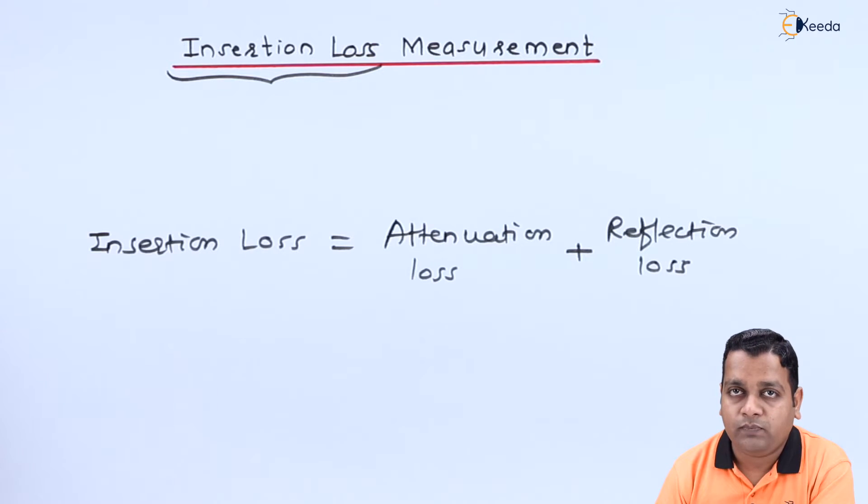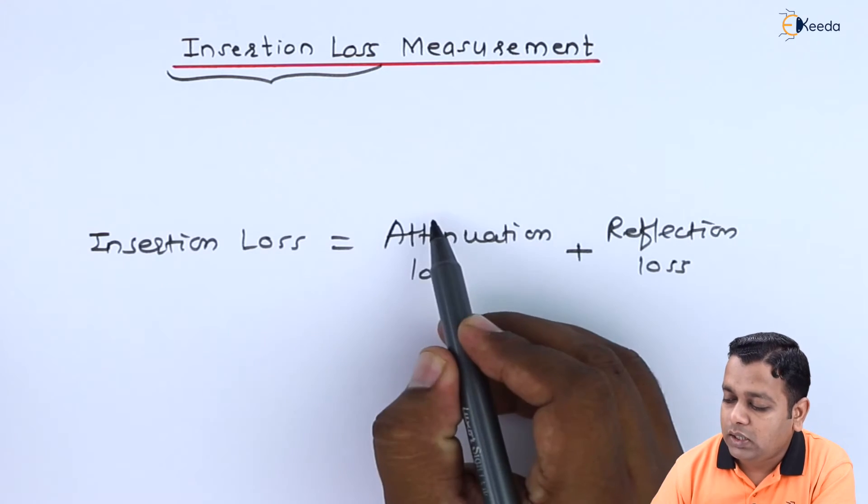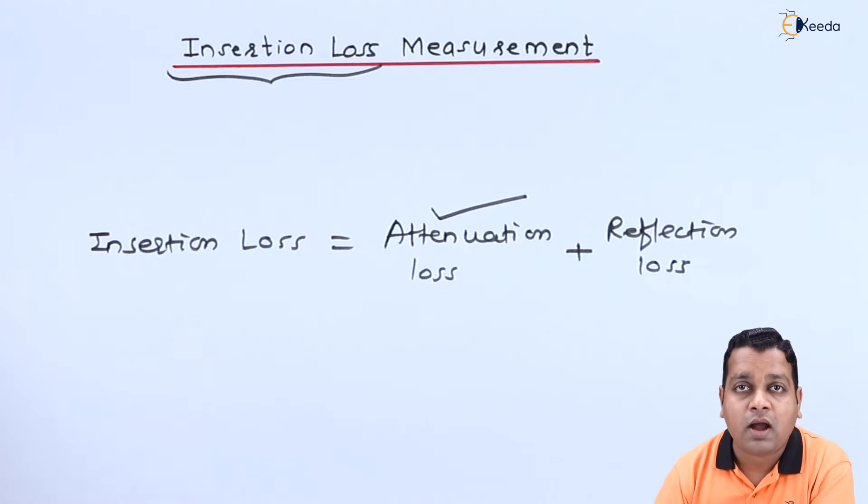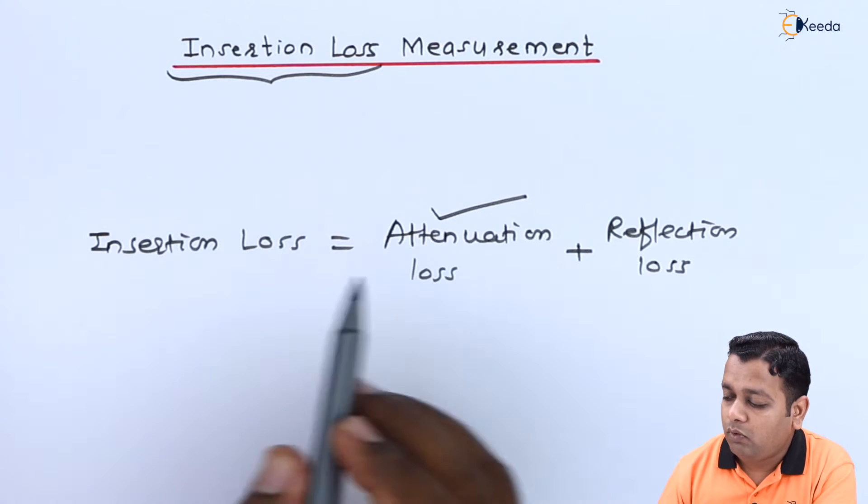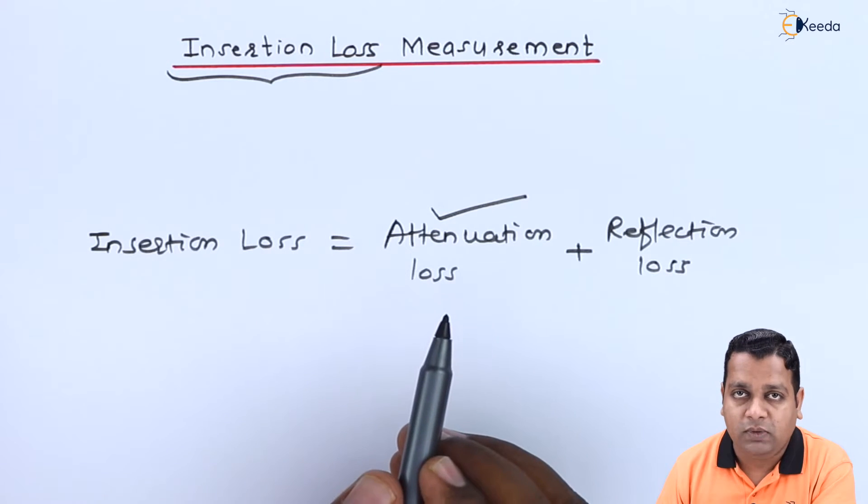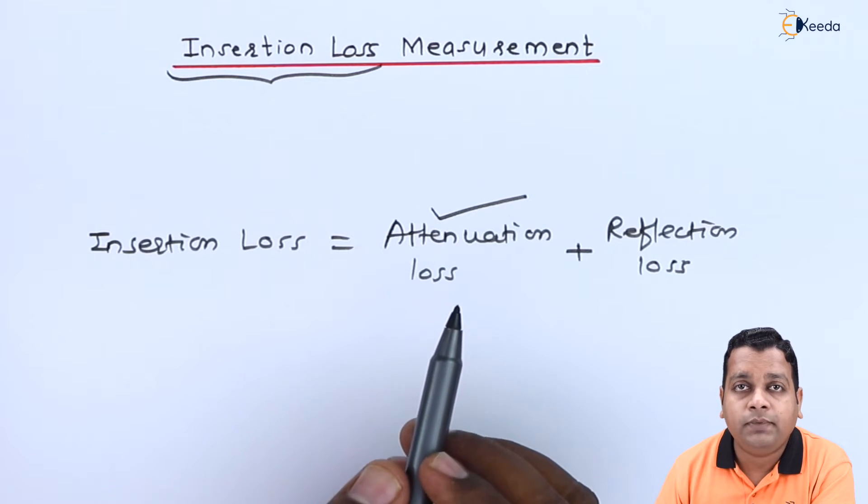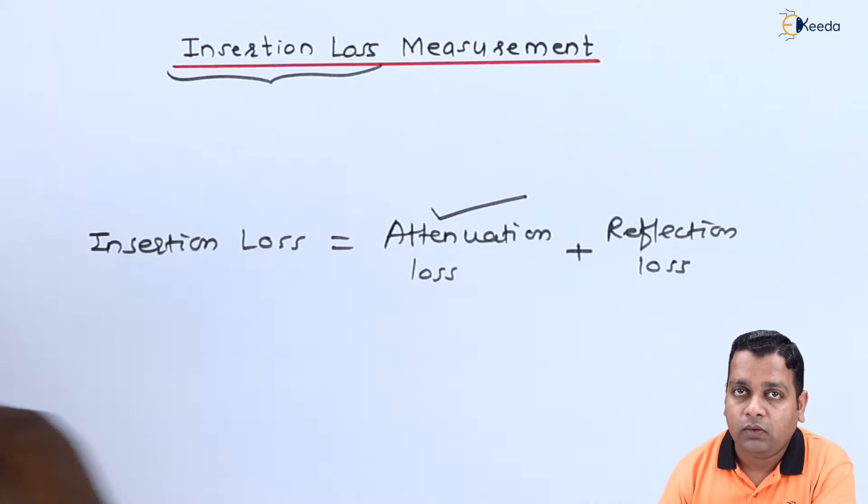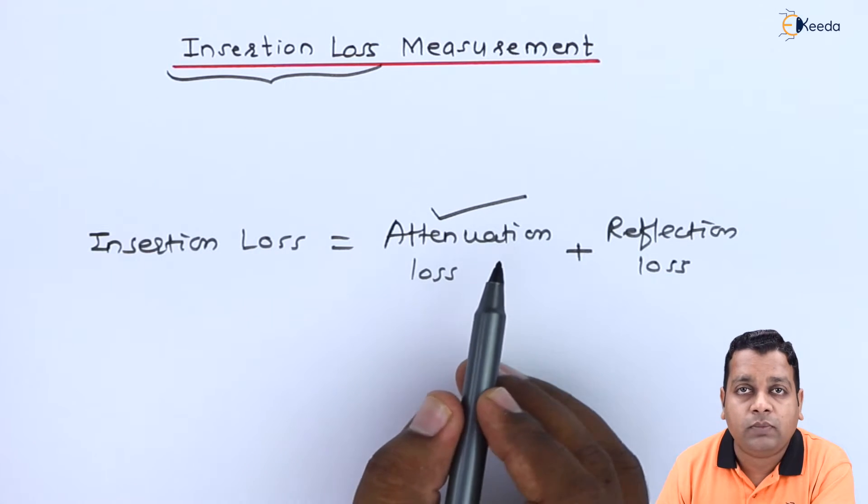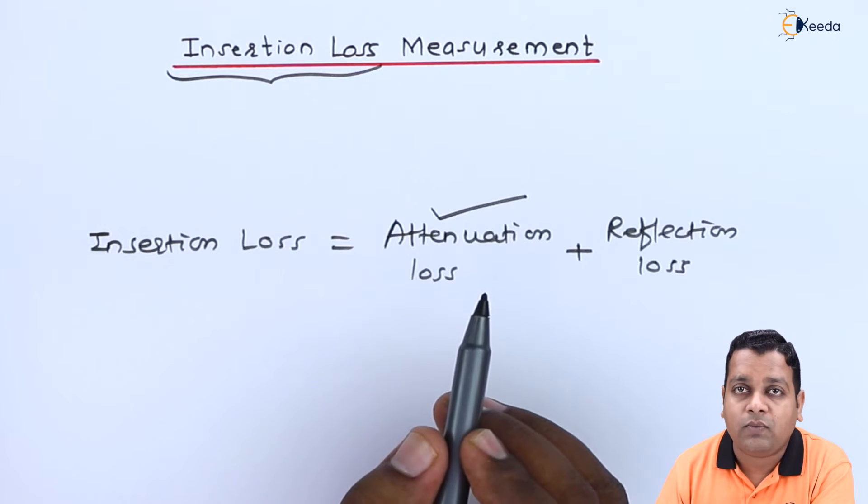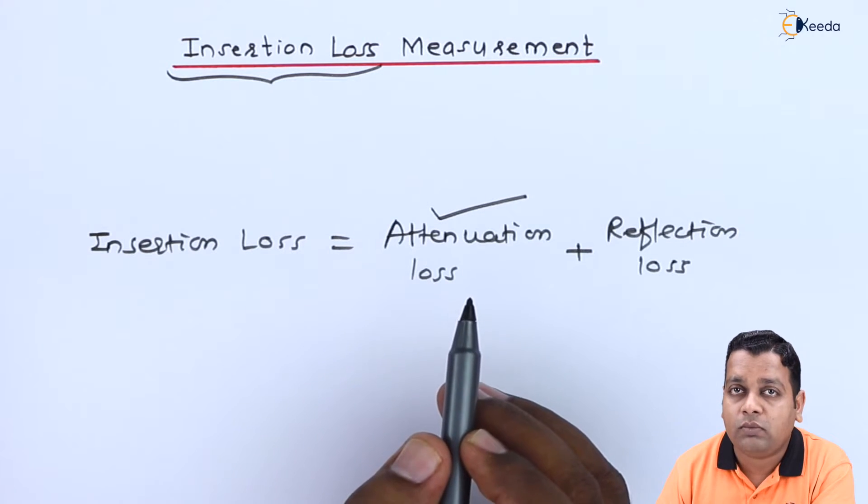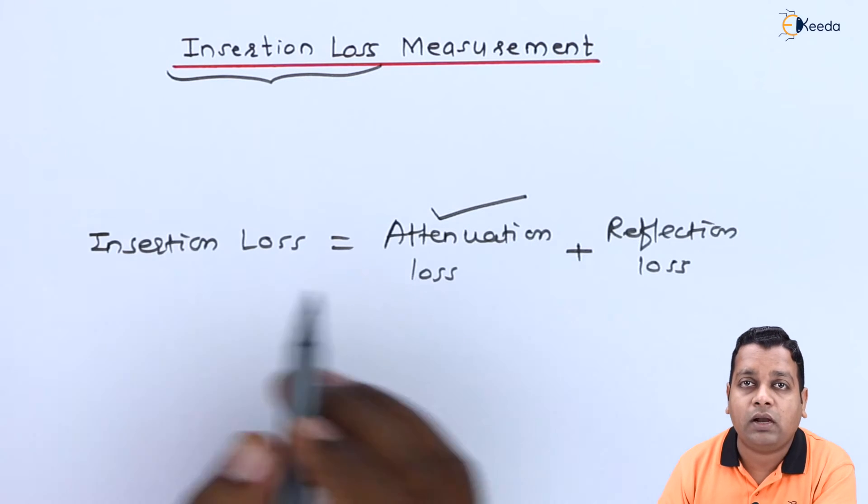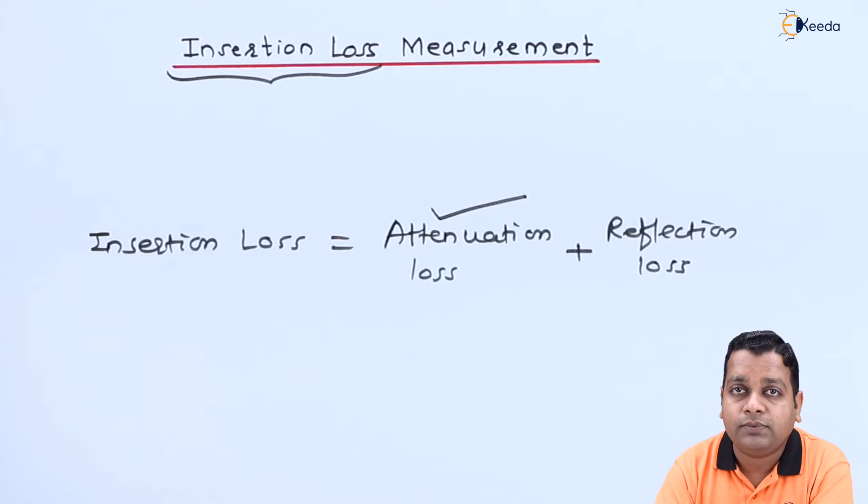Earlier in this chapter, in previous videos, we have gone through attenuation measurement techniques. The power ratio method and RF substitution methods were reported for attenuation measurement. Out of these two methods, the RF substitution method is better because the power ratio method has certain disadvantages that are overcome in RF substitution. Hence, the attenuation loss can be calculated using the RF substitution method.